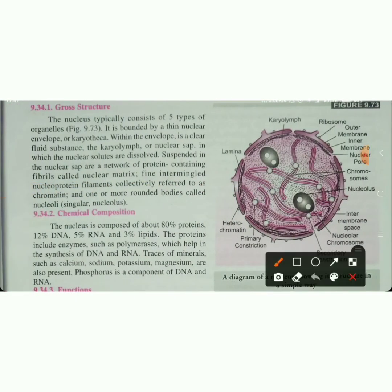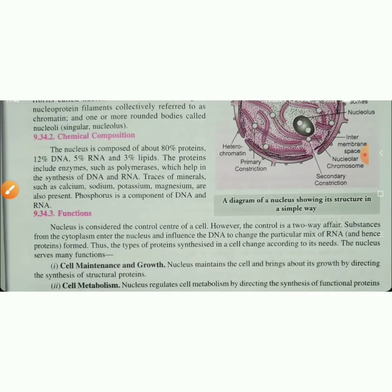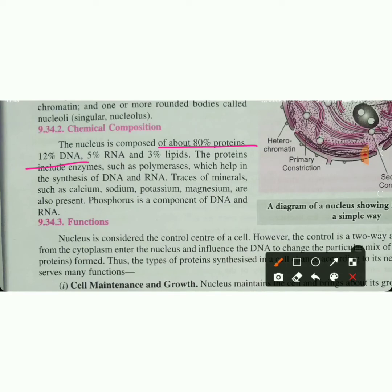Next is the gross structure of the nucleus. The nucleus typically consists of five types of organelles and is bounded by a thin nuclear envelope, also called the nuclear membrane. Regarding chemical composition, the nucleus contains 80% protein, 12% DNA, 5% RNA, and 3% lipids.